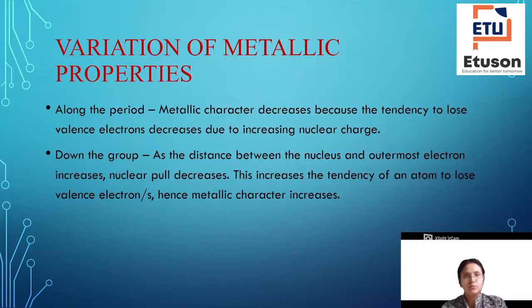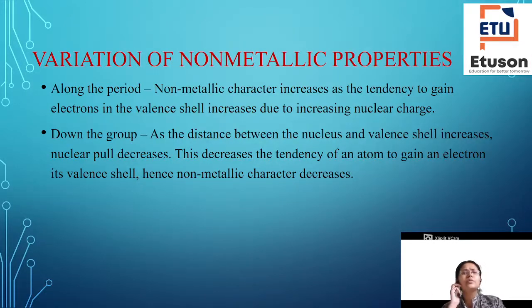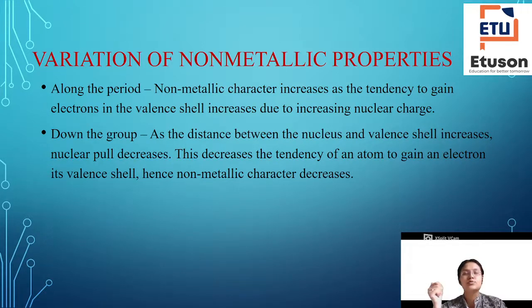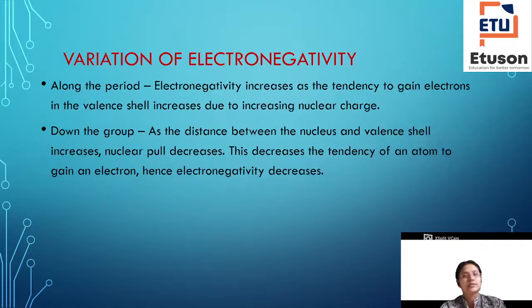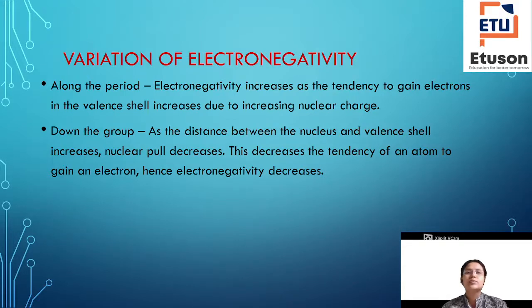The opposite happens in the group. Down the group, non-metallic character decreases because the distance from the nucleus increases and the ability to attract electrons is reduced. Electronegativity increases along a period. Down the group, electronegativity decreases.